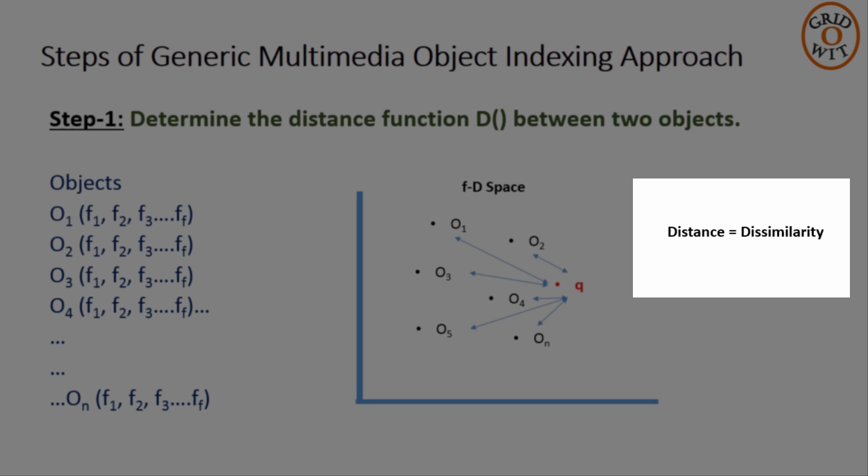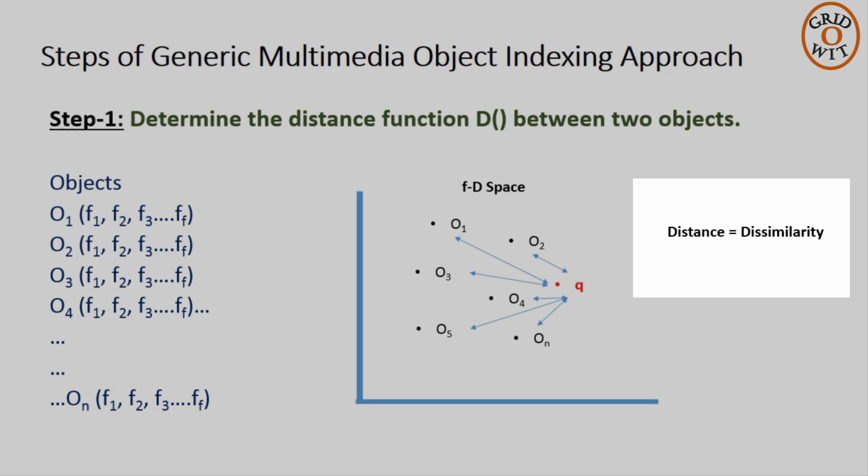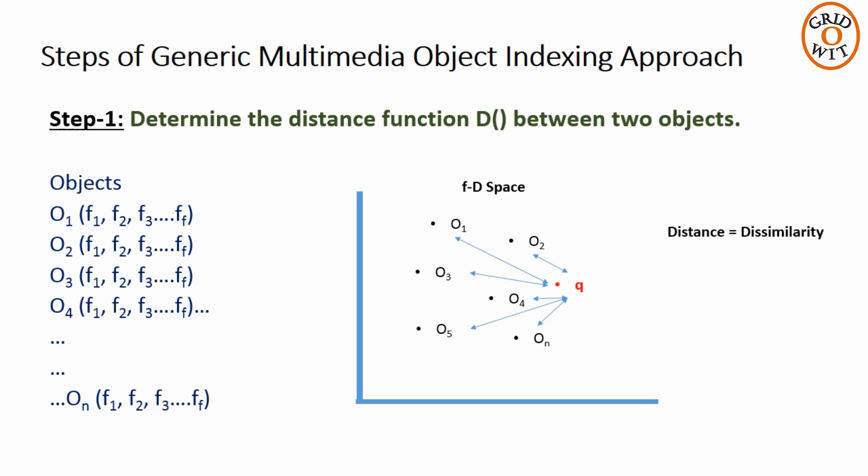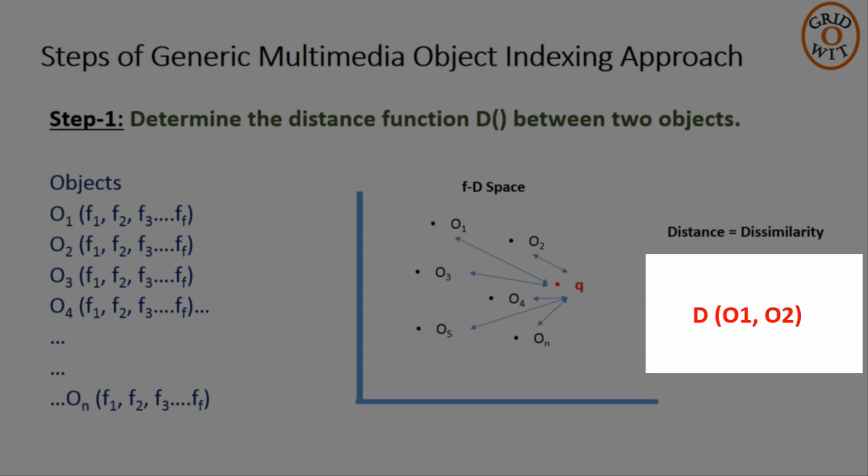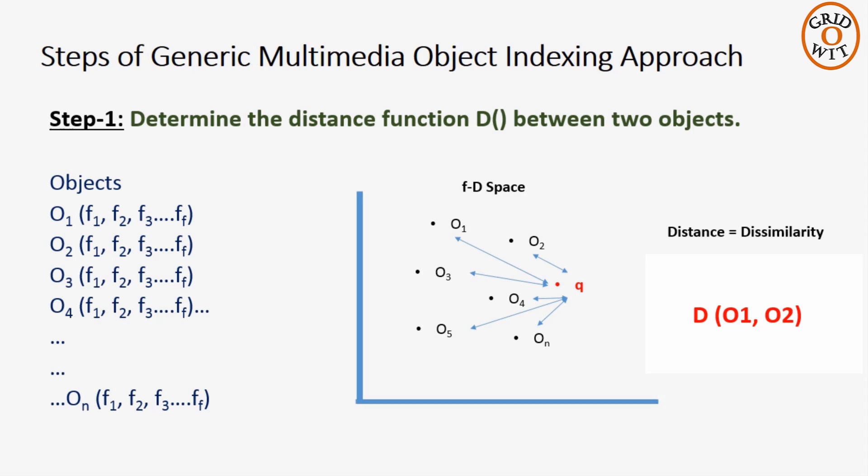Now the distance between two objects represents dissimilarity between those objects. More the distance value, more they are dissimilar. Of course, the distance between two objects has to be quantified. We rely on domain experts to provide such a distance function D. Given two multimedia objects o1 and o2, the distance or dissimilarity of the two objects is denoted by D(o1, o2).